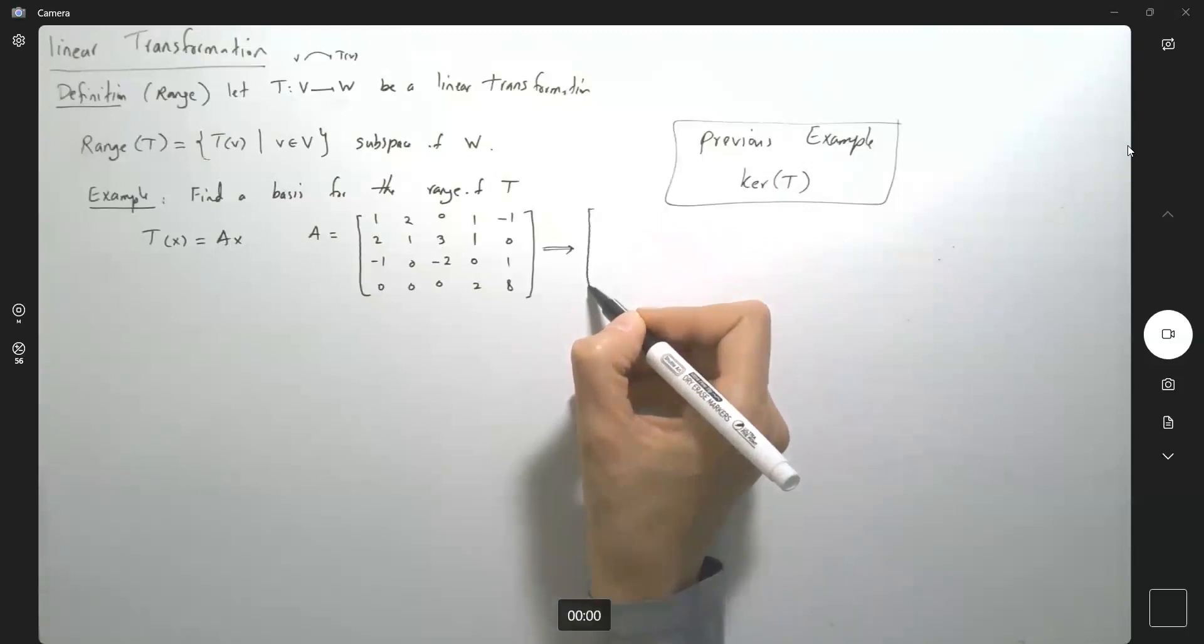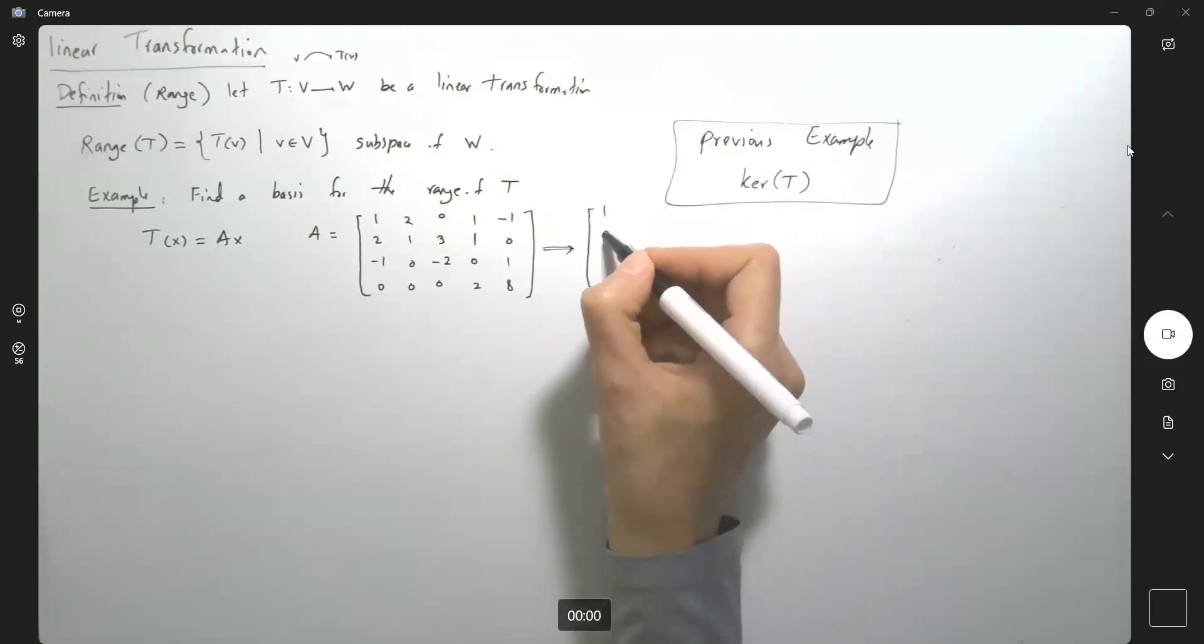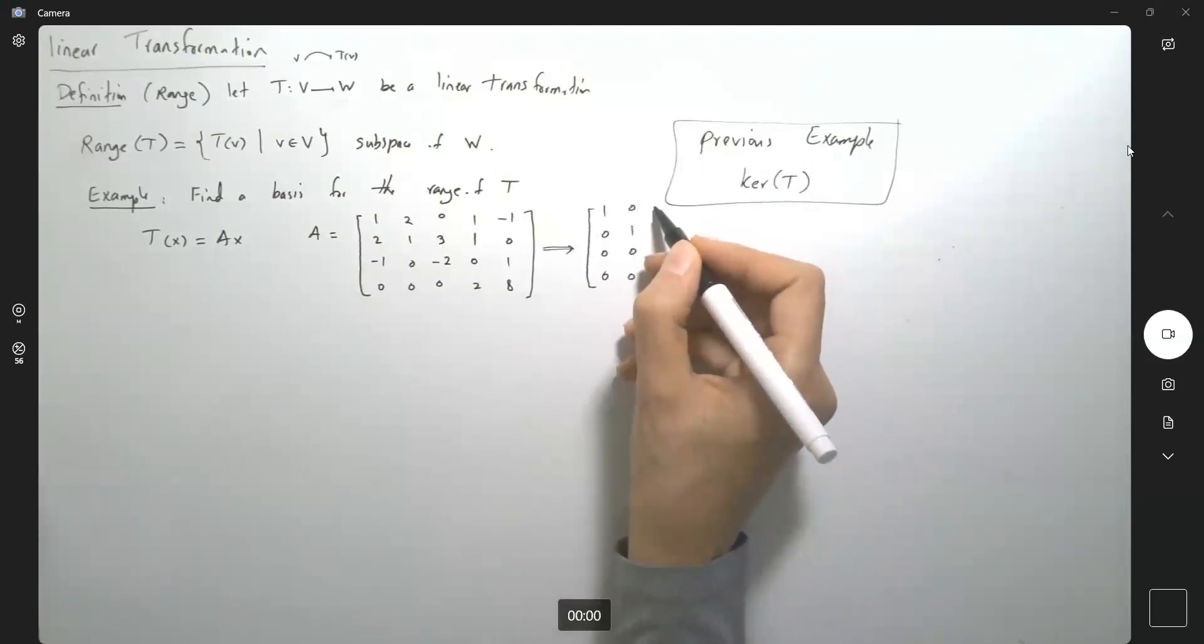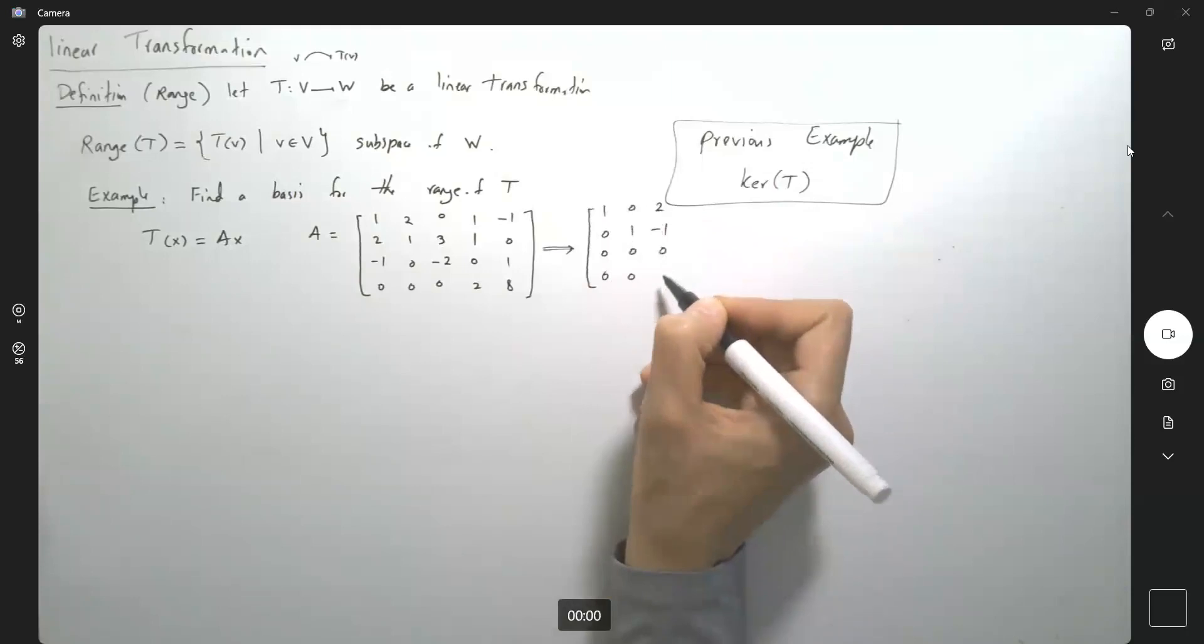So the reduced matrix is basically what we saw as 1, 0, 0, 0, and then here I had 0, 1, 0, 0. Then we have 2, negative 1, 0, and 0.